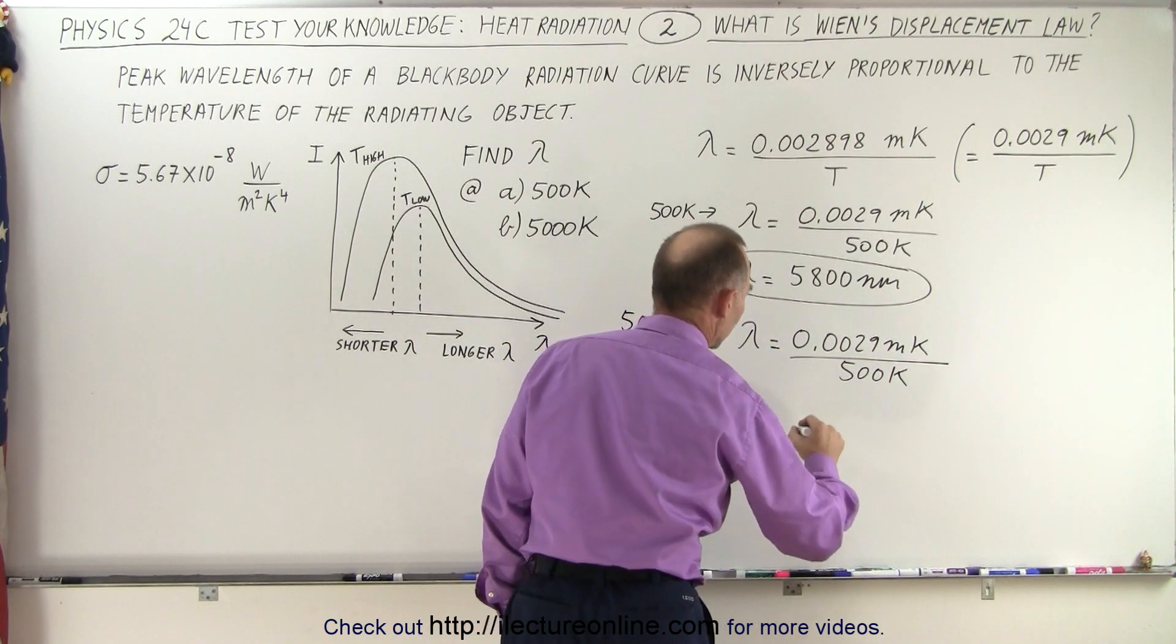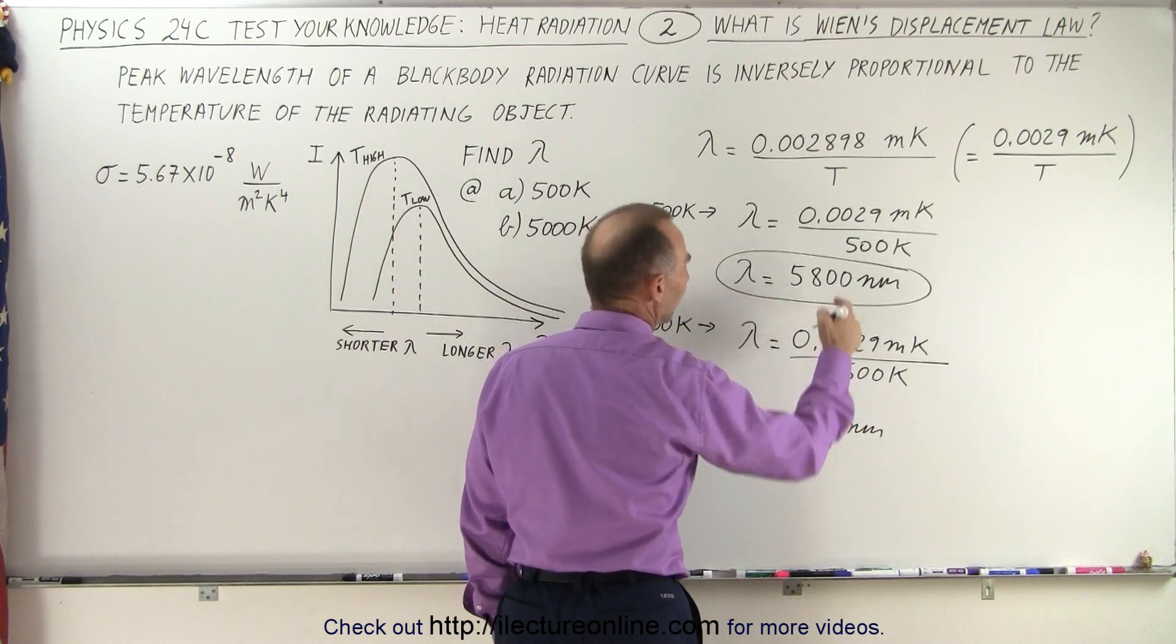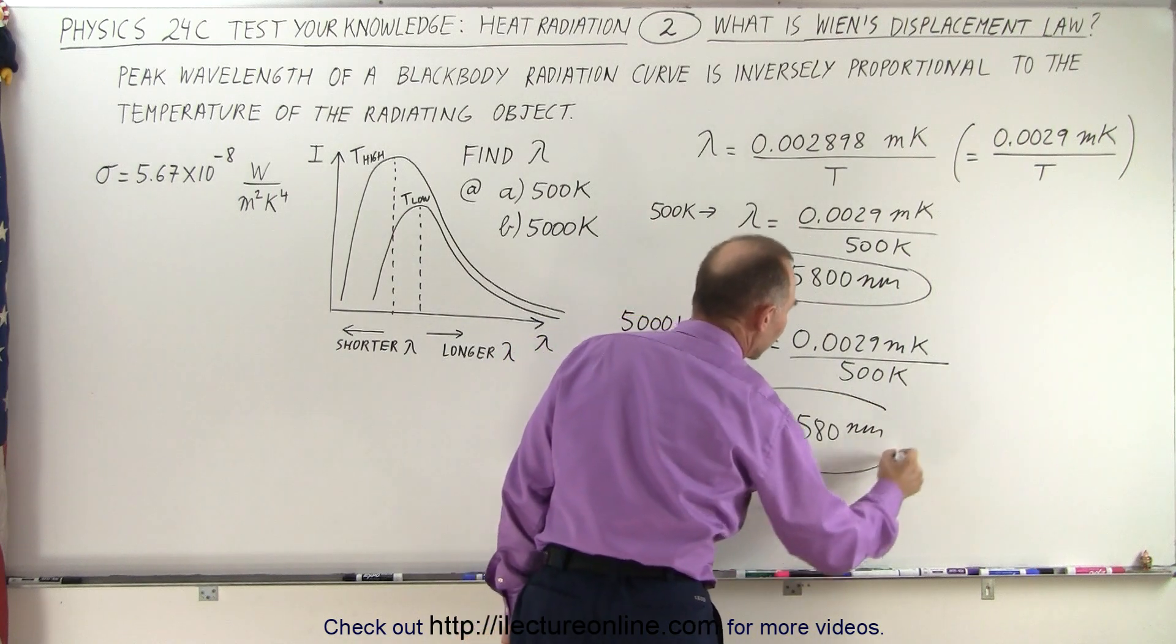So that would give us a wavelength equal to about 580 nanometers, one-tenth the length compared to before, because the temperature is 10 times as high.